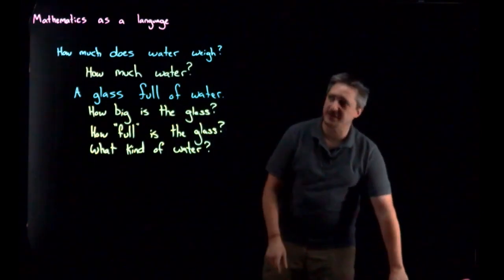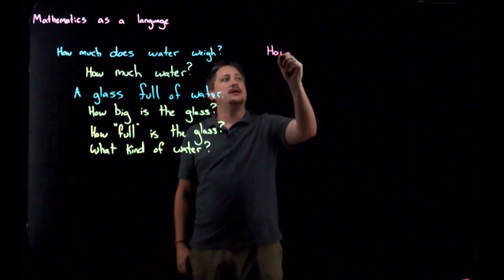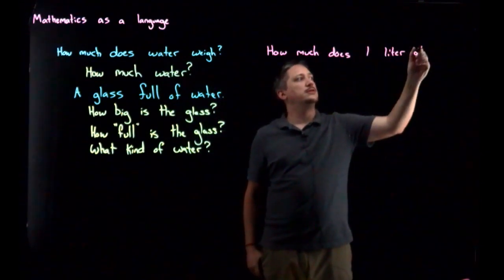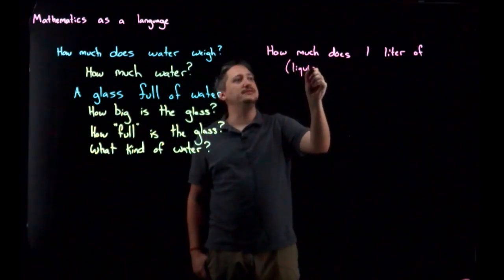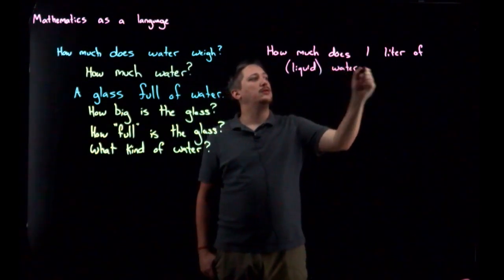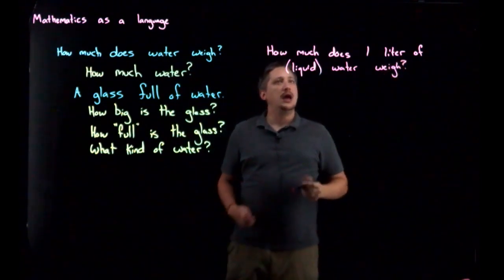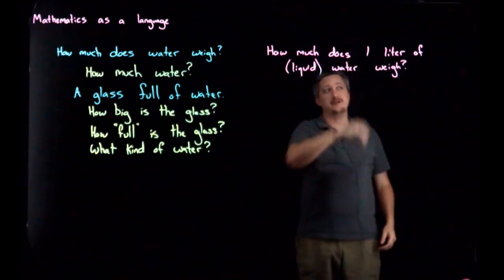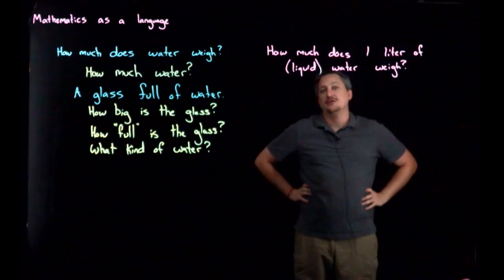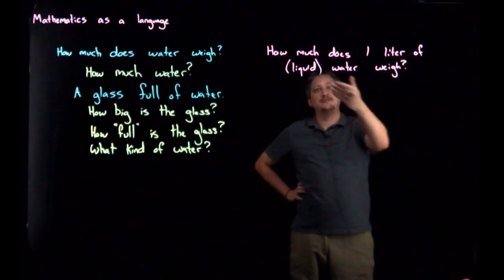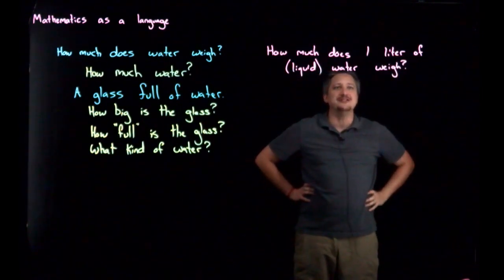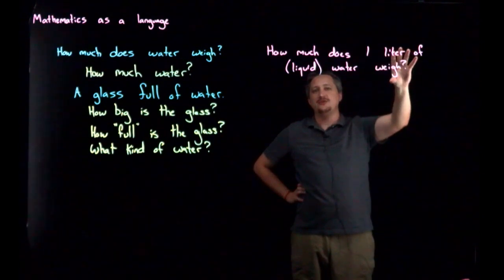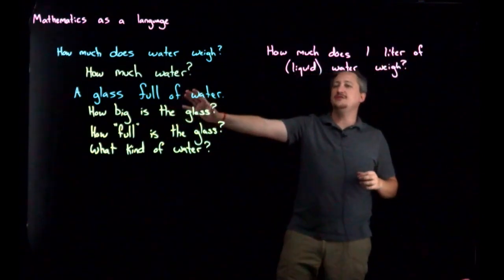In contrast, I could ask, how much does one liter of—and again, this is probably a little crazy, but specify—liquid water weigh? And now, I have that, I've given a specific volume, really a specific mass and volume, depending on how you're looking at these things. Regardless, I've given a specific amount of water. I've specified that it's liquid water, maybe a little aggressive of me, but nonetheless. This is a much more mathematical statement to make. I've narrowed it down to a specific thing that I'm considering, as opposed to this sort of still vague statement.